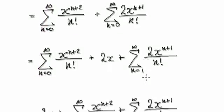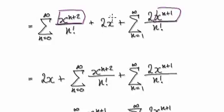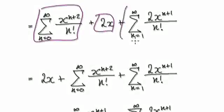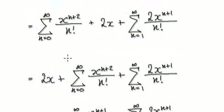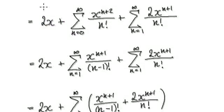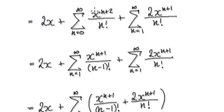Now we've got three blocks. Our aim is to merge these two summations together. So let's move the 2x term aside and concentrate on merging the two summation blocks, which takes us to here.